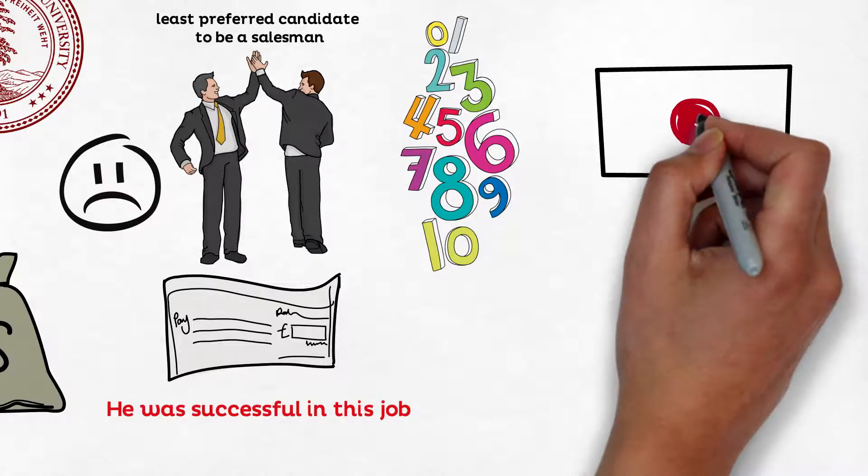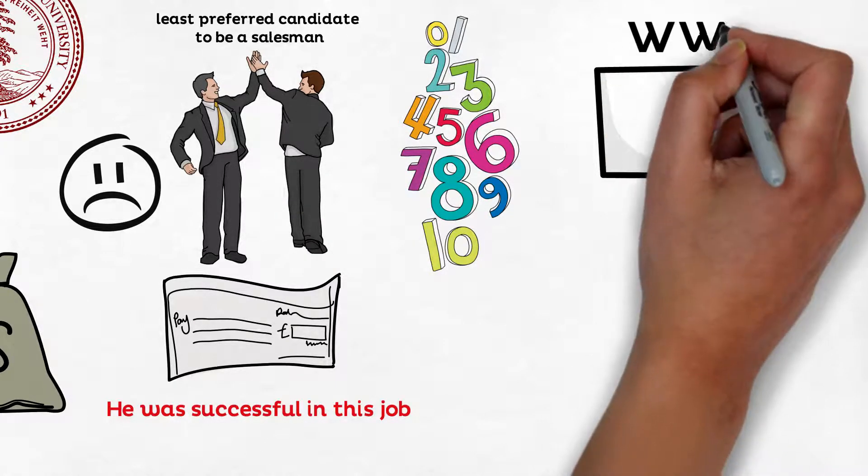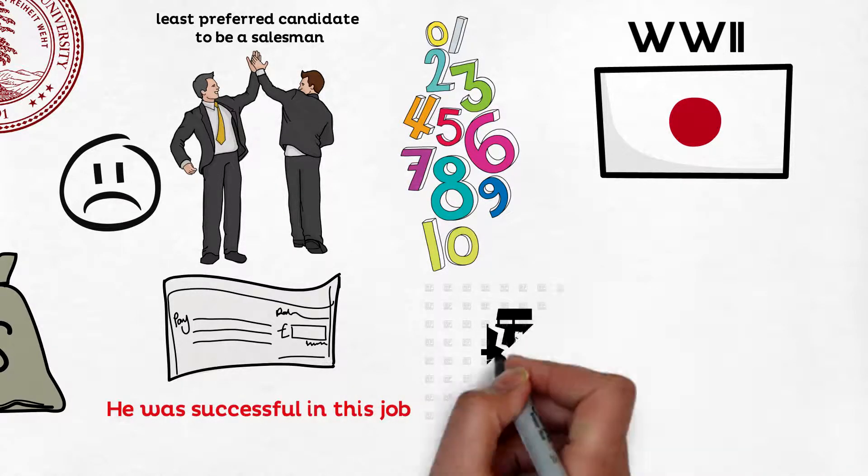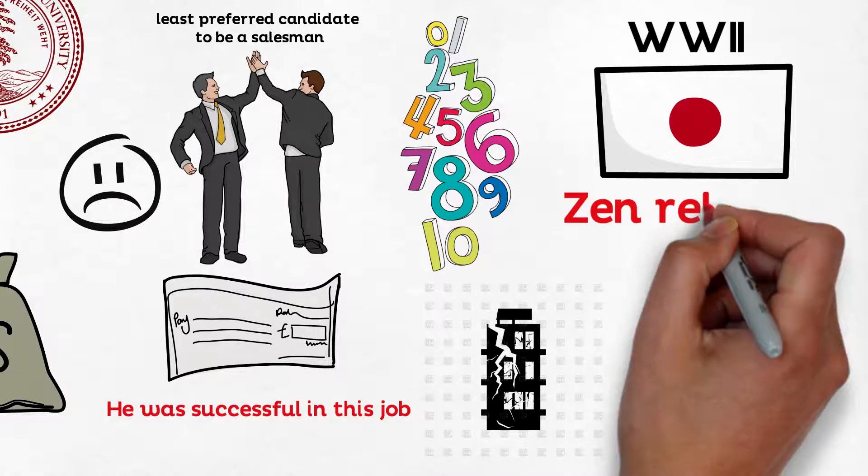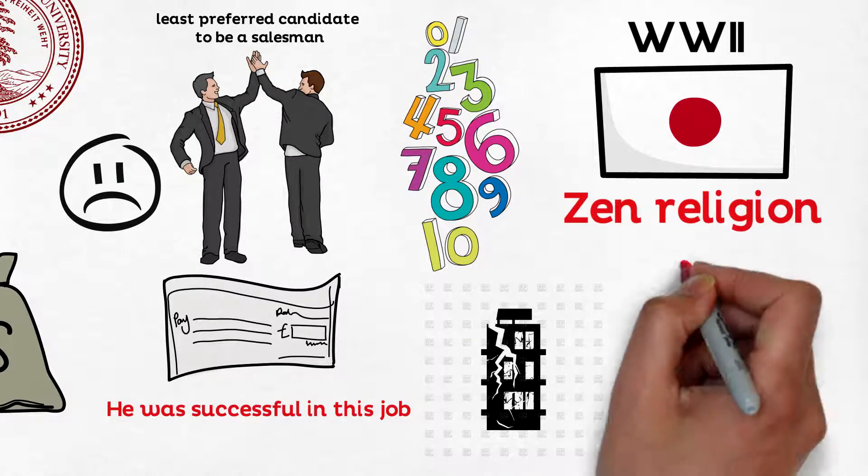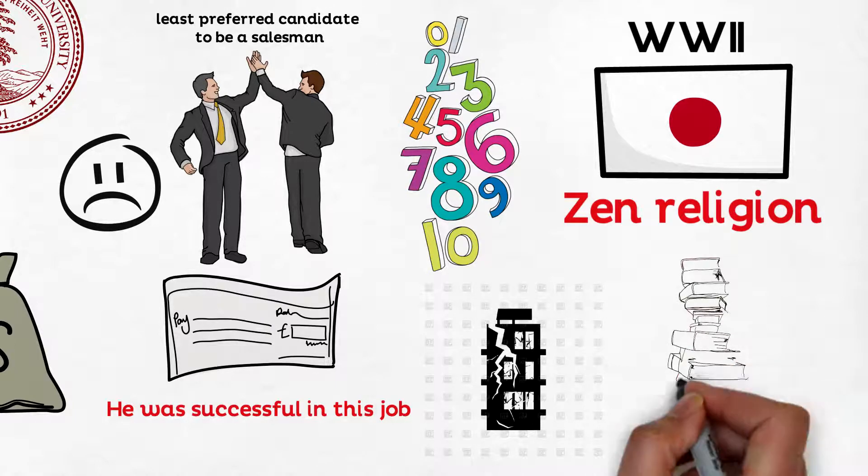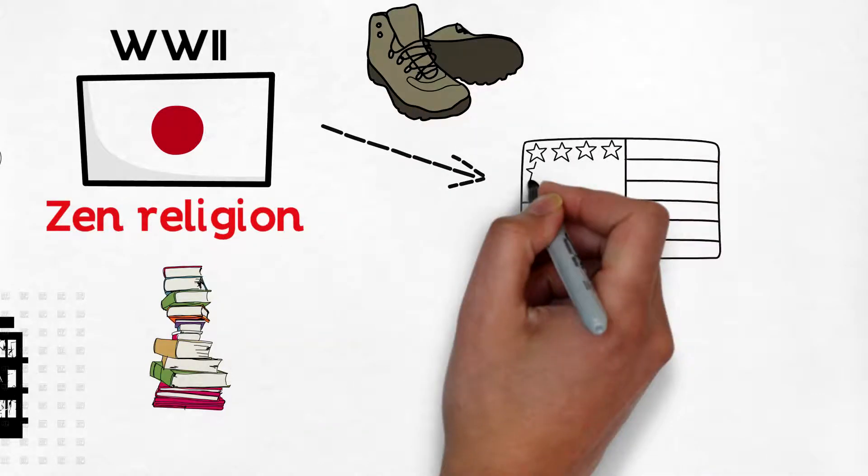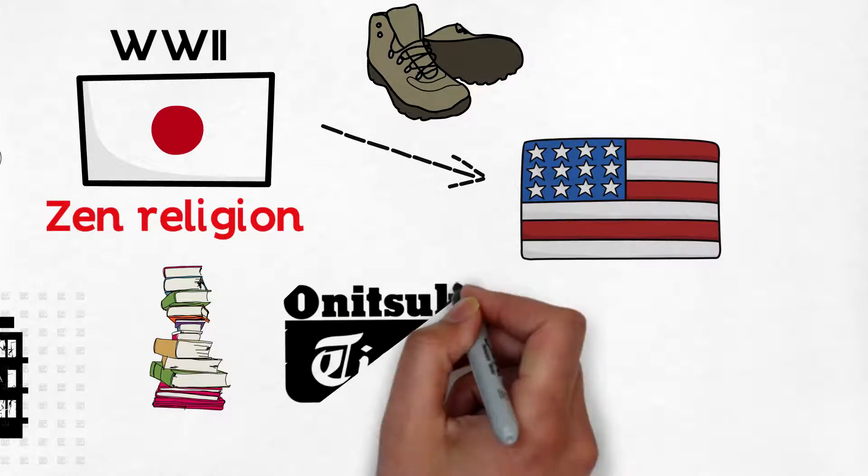Now he was successful in his job, but he wanted to get back on the track of world touring. He then decided to quit his job and head to Japan. Japan at that time was recouping from the post-war era. To him, it felt strange with buildings that were destroyed due to bombing. He then decided to explore Japan, and this is where he came upon the Zen religion. Phil was very interested in this religion and started studying it profusely.